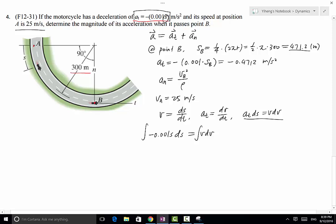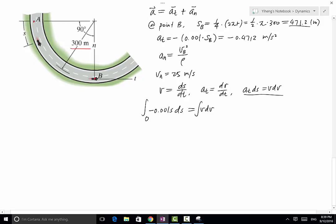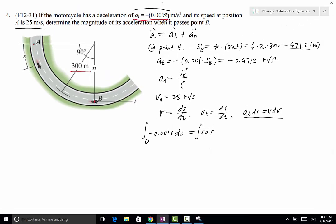At the initial point, point A, s equals to 0. The final point, point B, s equals to 471.2. And then v is integrated from the initial v of 25 to v_B. And v_B is what we need to know. And this equals to 1/2 v squared evaluated from 25 to v_B.